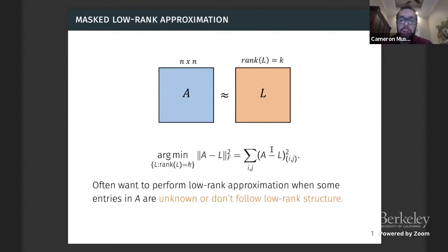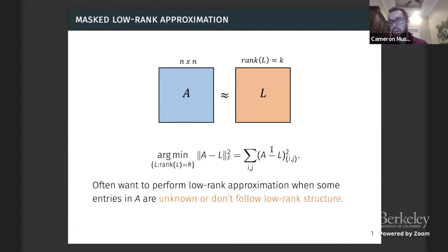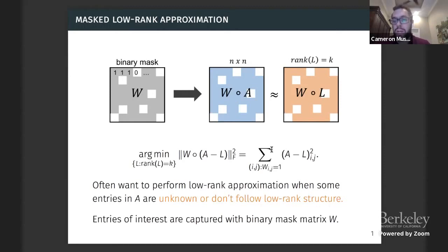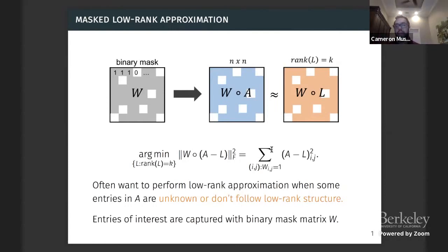The masked low-rank approximation problem arises when some entries of A are unknown, corrupted, or don't follow low-rank structure and you want to ignore them. We formalize this with a binary mask matrix W — an N by N binary matrix with ones on entries we care about and zeros on entries we want to ignore. Instead of minimizing the full Frobenius distance between A and L, we minimize the distance restricted to the ones in the mask: the Frobenius norm of W Hadamard product with A minus L.